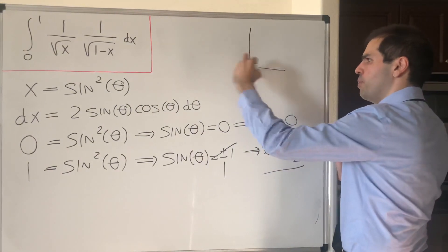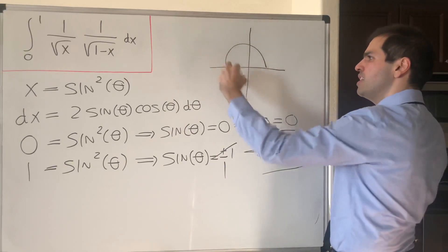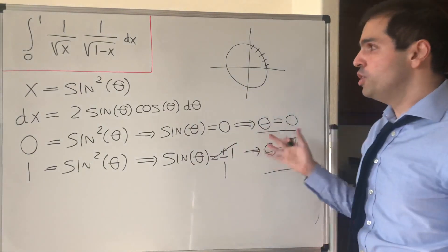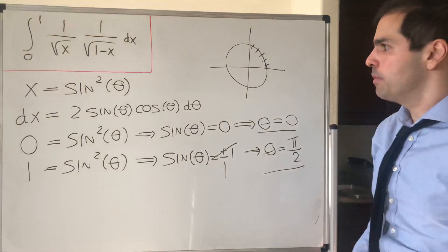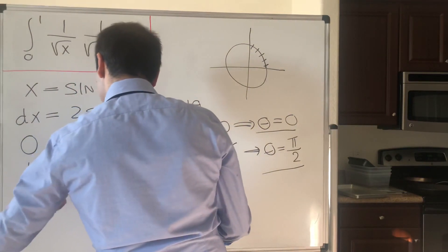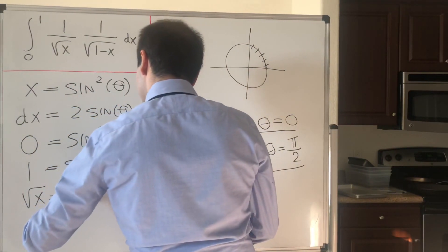And in particular, theta is between 0 and pi over 2, so it is in the first quadrant, which will be useful actually right now, because what is square root of x?